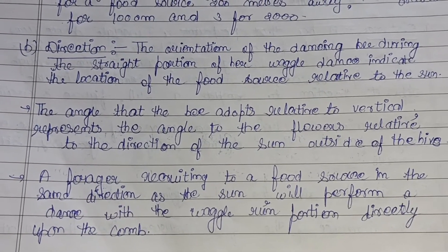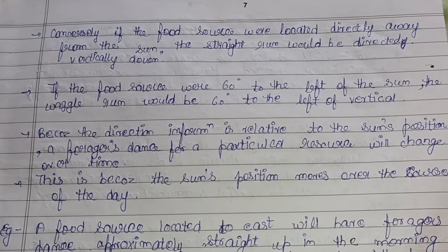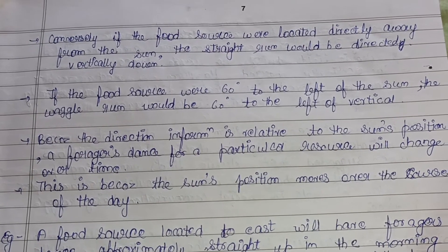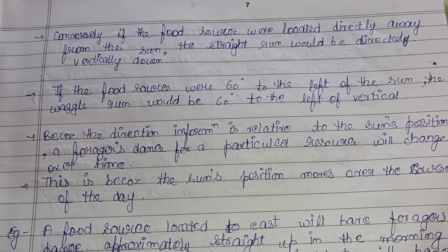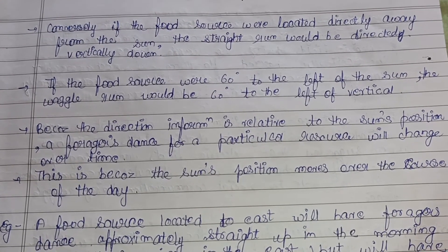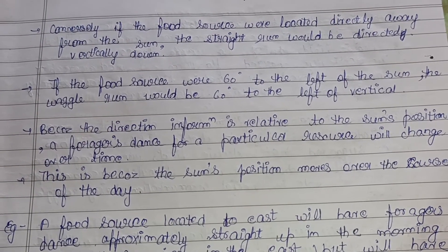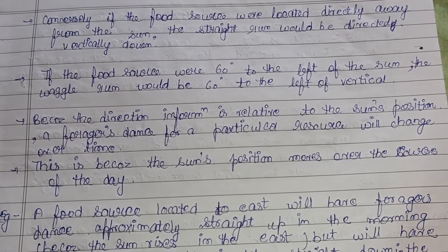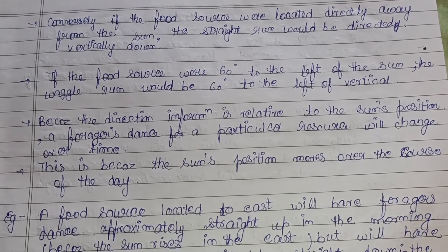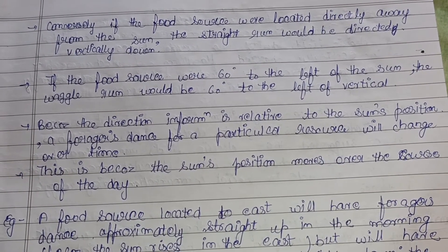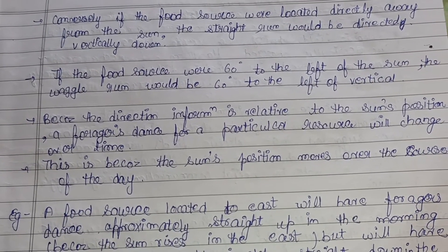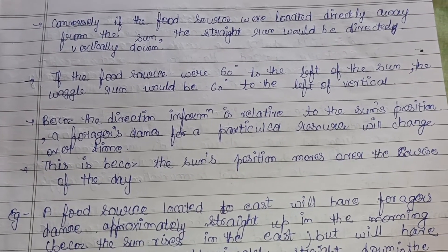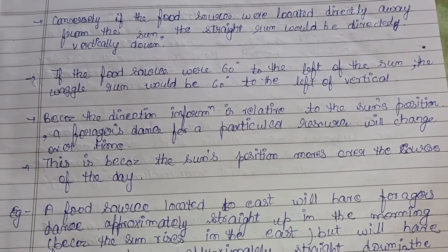Conversely, if the food source is located directly away from the sun, the straight run would be directed vertically down. If the food source is 60 degrees to the left of the sun, the waggle run would be 60 degrees to the left of the vertical. Because direction information is relative to the sun's position, a forager's dance for a particular resource changes over time as the sun's position changes throughout the day.